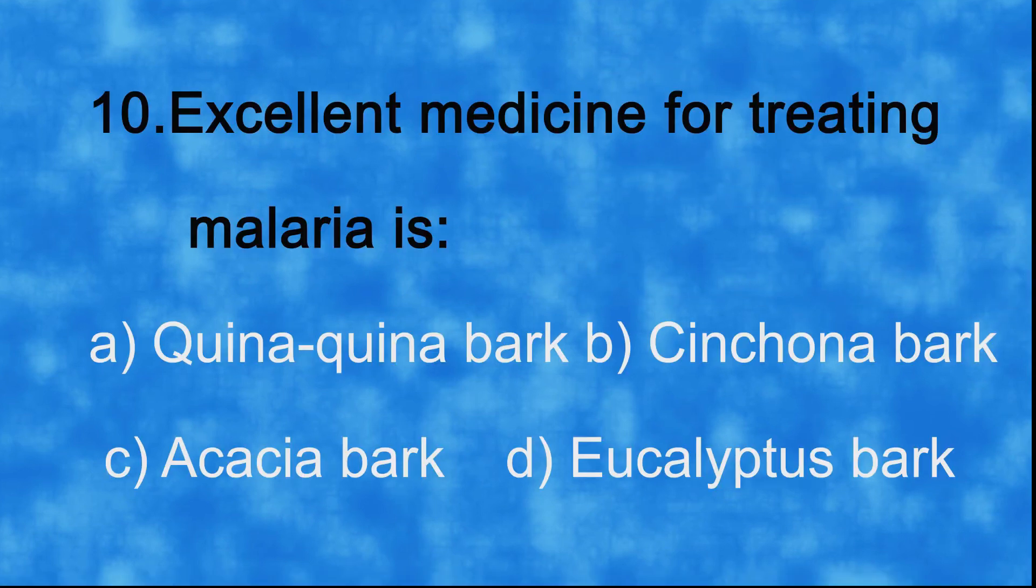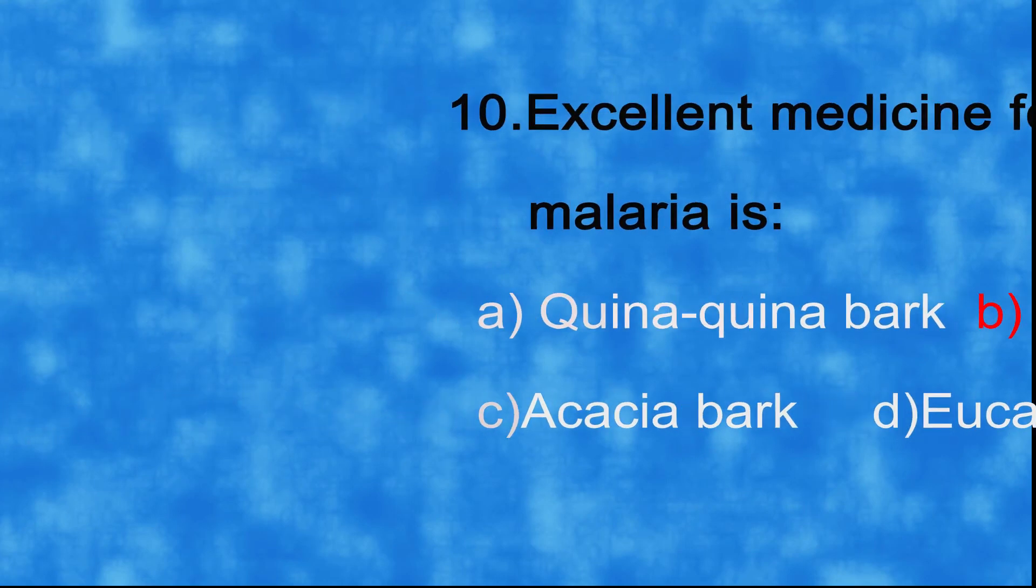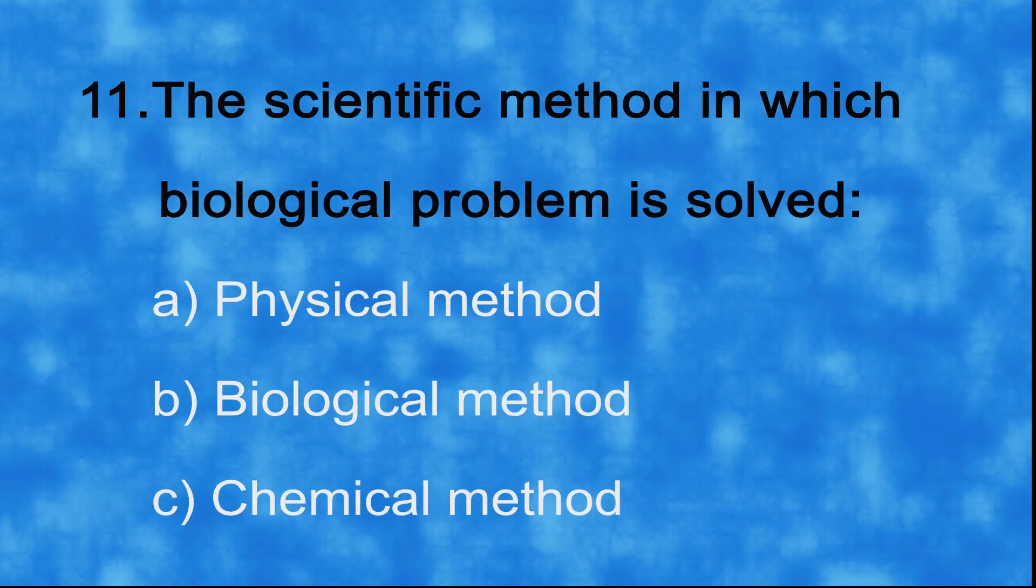Number 10: excellent medicine for treating malaria is a) Conapina bark, b) Cinchona bark, c) Acacia bark. And the correct option is b) Cinchona bark. Number 11: the scientific method in which biological problem is solved.